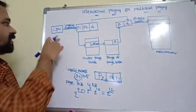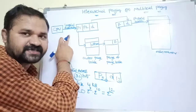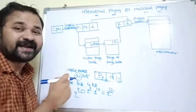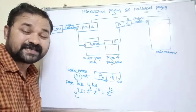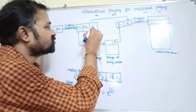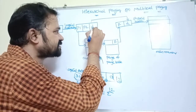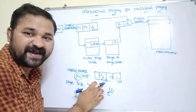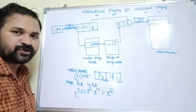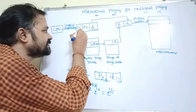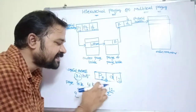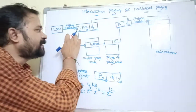Let's take an example for clarity. The CPU generates a 32-bit logical address where d = 12 bits. The 20-bit page number is divided into two parts: p1 = 10 bits and p2 = 10 bits, since 10 + 10 = 20.